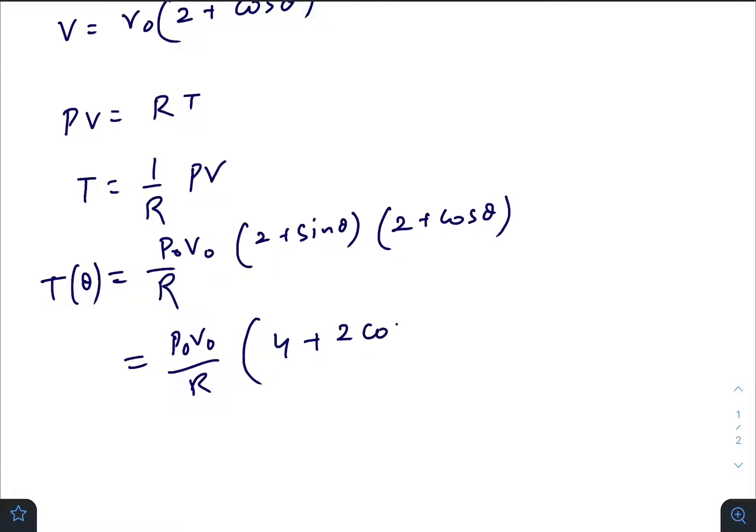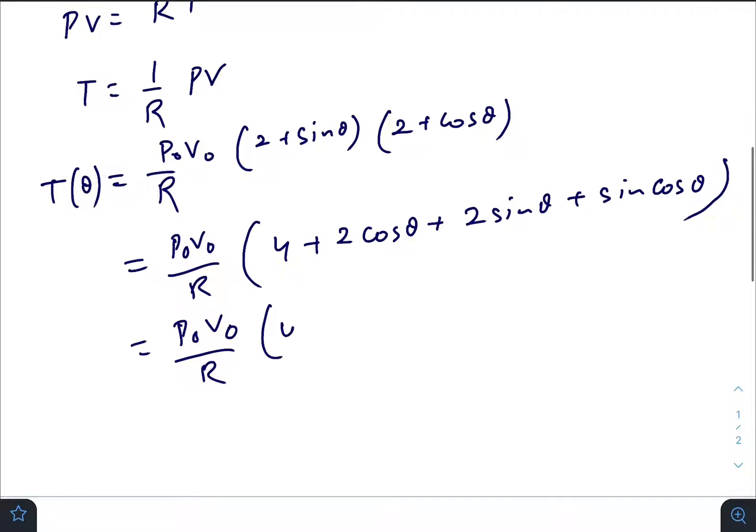2 cos θ plus 2 sin θ plus sin θ cos θ. So this becomes p₀V₀ by R times 4 plus 2 cos θ plus 2 sin θ plus half, and this becomes sin 2θ.